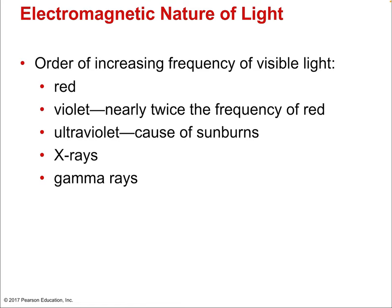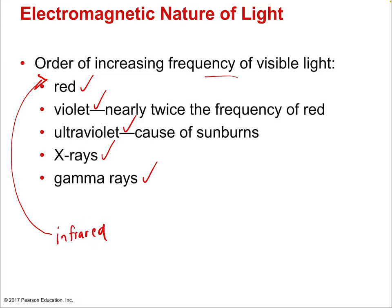In terms of order of increasing frequency of visible light, we go from red to violet to ultraviolet to x-rays and gamma rays. If we were to expand this list and include things above red — lower frequency — then next we'd include infrared, and then microwave and radio wave with even shorter wavelength and lower frequency.